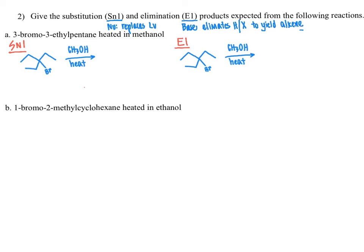Elimination reactions will always result in the leaving group being replaced with a nucleophile. To get to our correct product, I'm going to do the reaction mechanism for each of these. With SN1, the first step of the reaction mechanism is that the leaving group leaves, giving us our bromide anion as well as a carbocation.